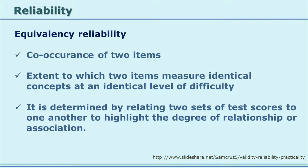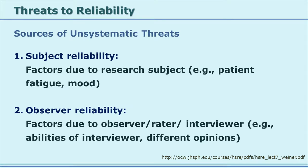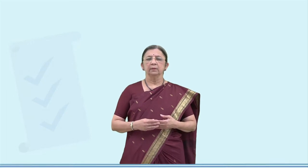There are unsystematic threats to reliability. One is subject reliability — factors due to the research subject. For example, if subjects are fatigued, if you are giving them the tool in the late evening when they are tired, their answers may be different. This is called a threat because of the subjects.